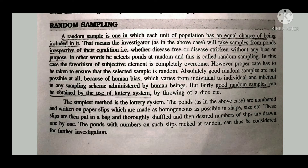In random sampling, the investigator will take samples from ponds irrespective of their condition — that is, whether disease-free or disease-stricken — without any bias or purpose. In other words, he selects ponds at random, and this is called random sampling.